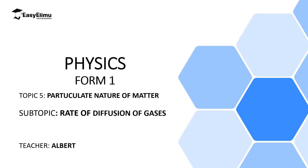Welcome to ECLIMU Learning Simplified and welcome to this lesson. In the previous lesson we discussed diffusion in liquids and gases and we realized that diffusion is faster in gases than liquids. We gave some reasons for that: gases have low density, gases have high kinetic energy, and gases have weak intermolecular forces between their particles, therefore they move fast.